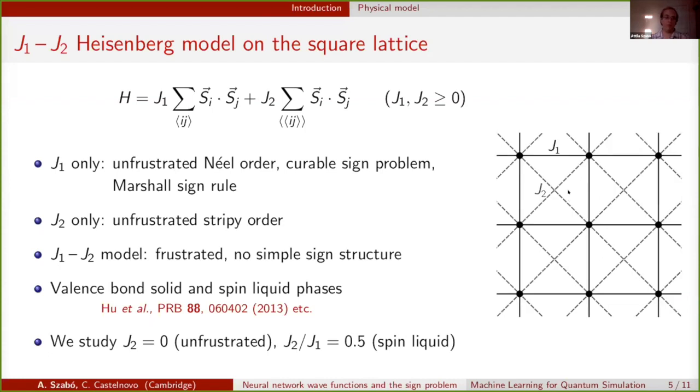If now we go to the J1-J2 model, so we have both of these couplings, we see that this model is now frustrated because of these antiferromagnetic triangles going around. As a result, there is no simple sign structure or a Marshall sign rule that we could impose on it to cure the sign problem. We know that the literature knows that between the Néel and the stripy orders, we also have valence bond solid and spin liquid phases on the phase diagram.